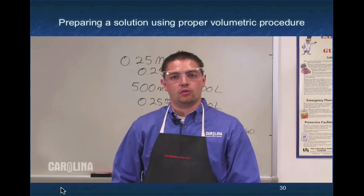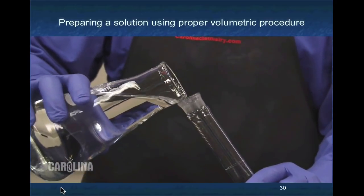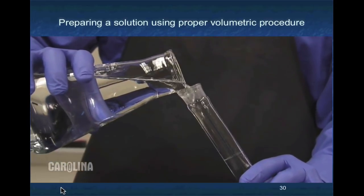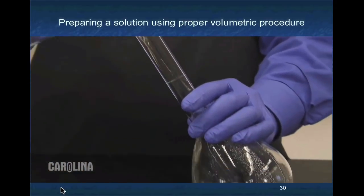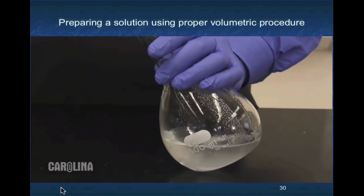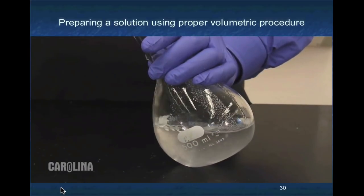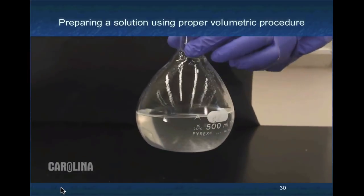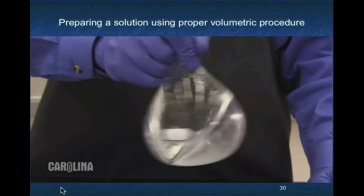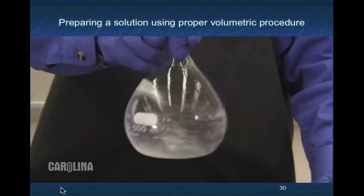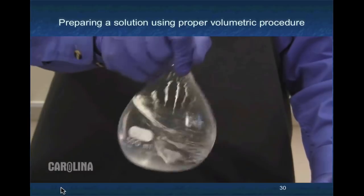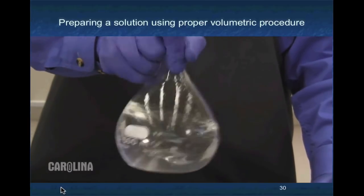If any solute remains on the weighing paper, use a spatula or a small amount of water to transfer the remaining salt. Next, add enough water so that the bulb area at the bottom of the flask is approximately half full. This will give you enough room to swirl the liquid, allowing the solute to completely dissolve. Again, it's critical that all of the solute is dissolved prior to filling to the appropriate volume, as different solutes may take up more volume in solution than their undissolved salts.